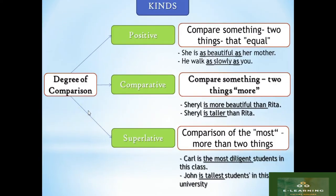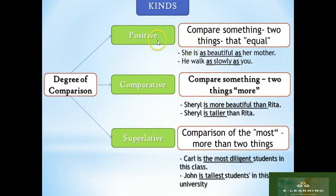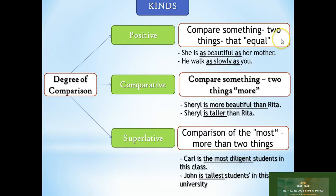The first is positive degree. What is positive degree? Positive degree is used to compare two things that are equal. For example, if both are beautiful, both are handsome, or both are smart. So we can make sentences like: 'She is as beautiful as her mother' — she is equally as beautiful as her mother. 'He walks as slowly as you' — he walks with the same slowness as you.